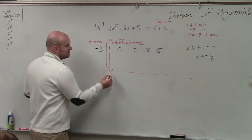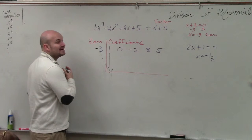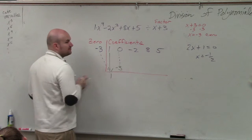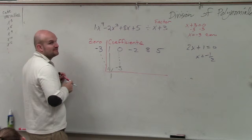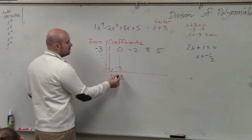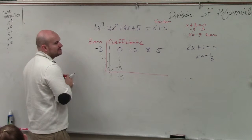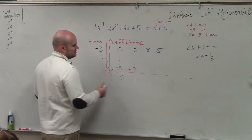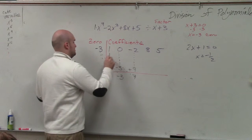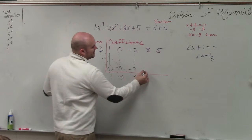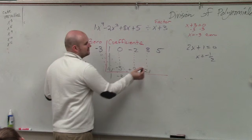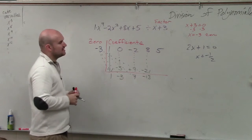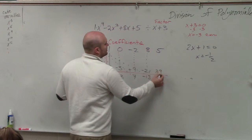Now we're going to multiply on the diagonals and add on the vertical. 1 times negative 3 is negative 3; 0 plus negative 3 is negative 3. Multiply on the diagonal: negative 3 times negative 3 is positive 9. Add on the vertical: negative 2 plus 9 is 7. Multiply on the diagonal: 7 times negative 3 is negative 21. Add on the vertical: 8 plus negative 21 is negative 13. Multiply on the diagonal: negative 13 times negative 3 is positive 39.